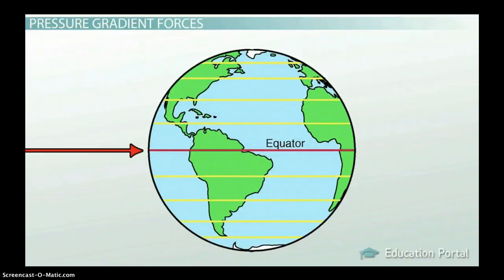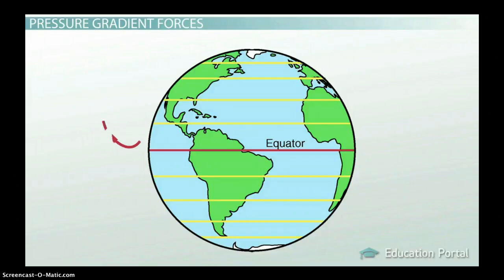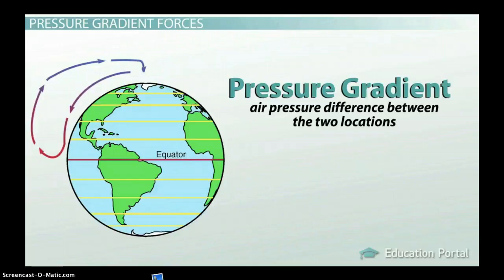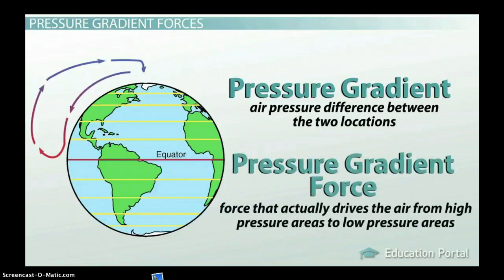Let's back up and see how this works. Say we have a warm location like the equator and a cold region like the North Pole. Air at the equator is warmed with more solar energy than air at the North Pole, so it rises and then moves horizontally toward the North Pole. As it cools, it sinks back down toward the warmer equatorial region. The air pressure difference between the two locations is called the pressure gradient, and the force that actually drives the air from high pressure area to low pressure area is called the pressure gradient force.